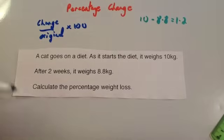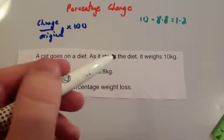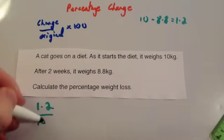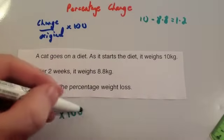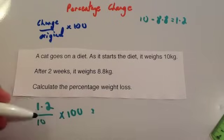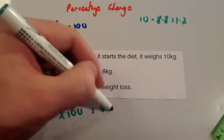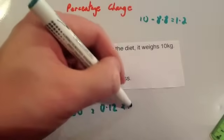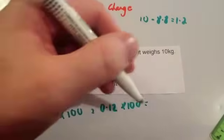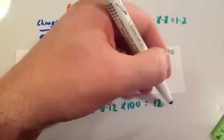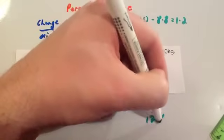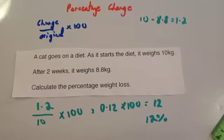So the change is equal to 1.2 divided by the original, which was 10 kilograms, so by 10 and then times by 100. So 1.2 divided by 10 is 0.12 times 100. And 0.12 times 100 is 12. So the percentage change is 12%, or the percentage weight loss is 12%.